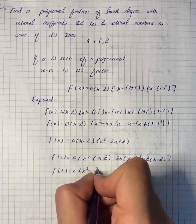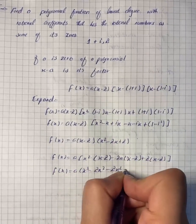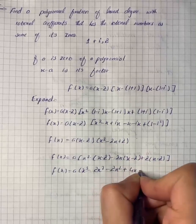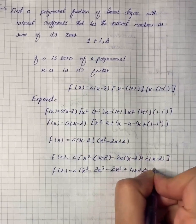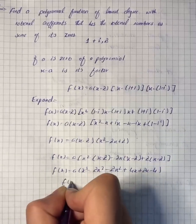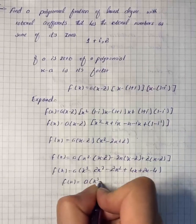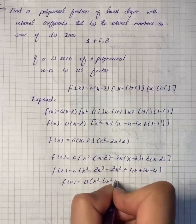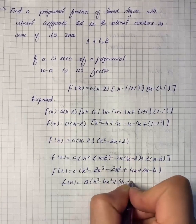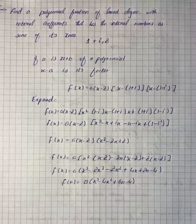This gives us x cubed minus 2x squared minus 2x squared plus 4x plus 2x minus 4. Now we have the function in the form of a into x cubed minus 4x squared plus 6x minus 4.